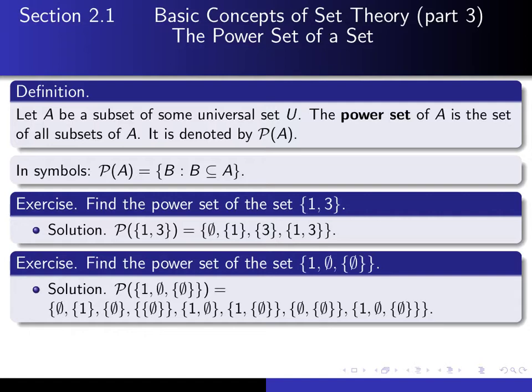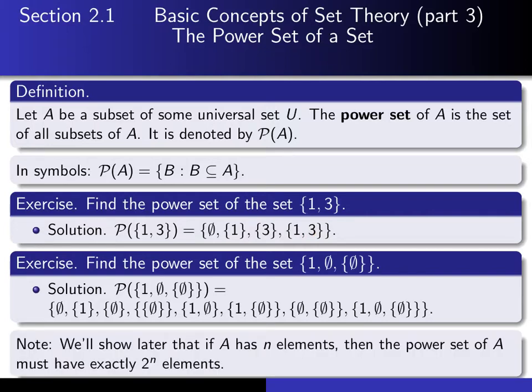So now notice, this had three elements, and we wound up with the power set having eight. This had two. The power set had four elements. You may recognize a pattern there. And in fact, it's true in general that if you start with a set having n elements, the power set will have 2^n elements. There are 2^n subsets of any set A, of a set A having n elements. So we'll see how to prove that a little bit later using induction. It's a nice example of induction. But for now, it's just worth remembering that fact.